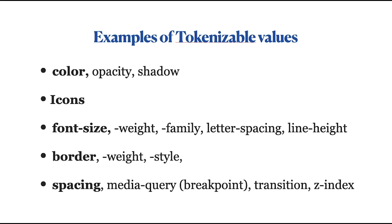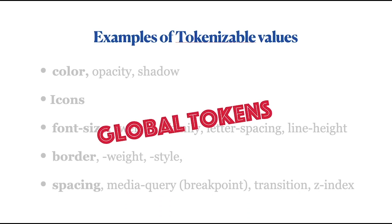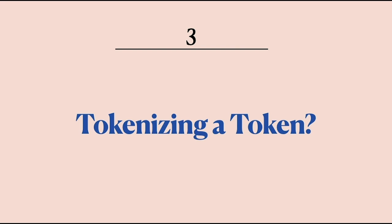So this Starbucks green is an example of a token. But in reality, what else can be a token? Colors, opacity, shadow, icons, all these properties of fonts, borders, and spacings as well. Even breakpoints, transition, and Z-index — Z-index is basically what comes above and what comes below.